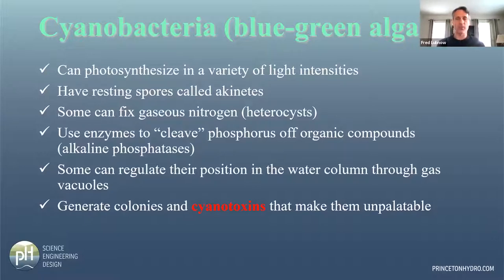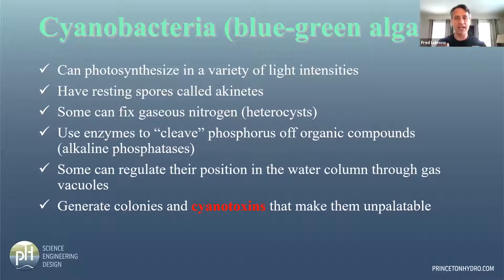Cyanobacteria can regulate their position in the water column through gas vacuoles — that's how they make those nasty surface scums. They can float to the surface, photosynthesize, and then collapse those gas vacuoles to sink to deeper waters where there may be more nutrient-rich concentrations. They also generate large colonies that make them difficult to be grazed on by the zooplankton.